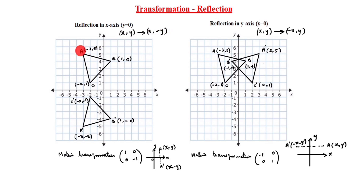For example, a is given as minus 3 comma 5. For the reflected image: x stays as minus 3, and minus y means minus 5. So a reflected is minus 3 comma minus 5.